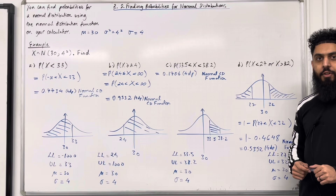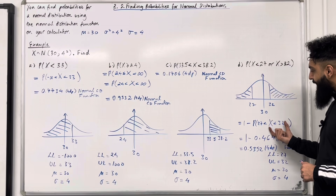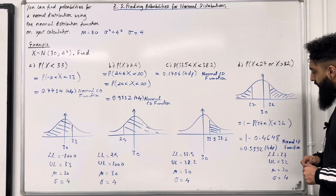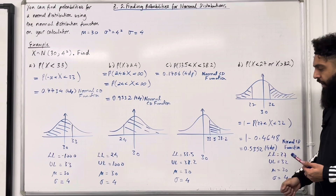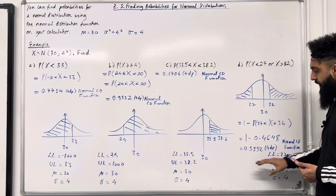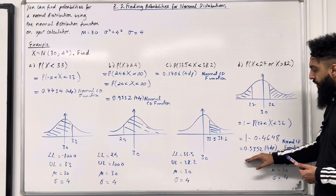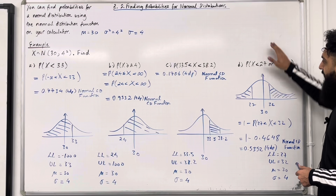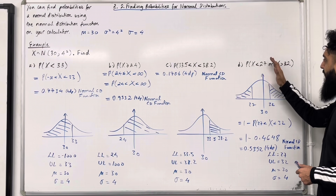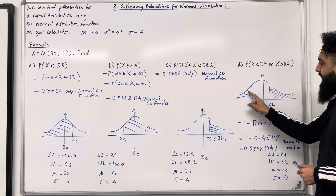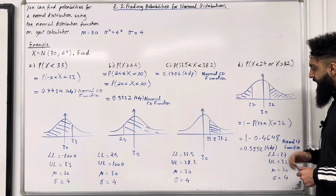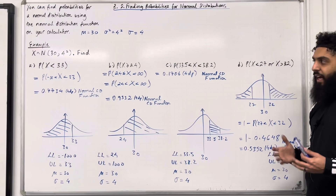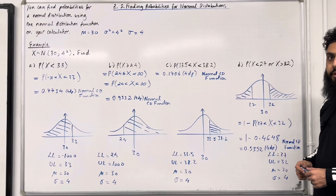Using the normal CD function, the probability that X is between 27 and 32 is equal to 0.4648 to 4 decimal places. Then 1 minus that gives us the final answer of 0.5352 to 4 decimal places. So the probability that X is less than 27 or X is more than 32 — these two areas added together — is 0.5352 to 4 decimal places. That completes my example.